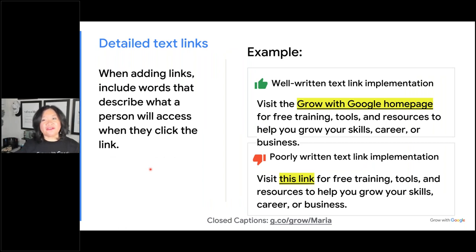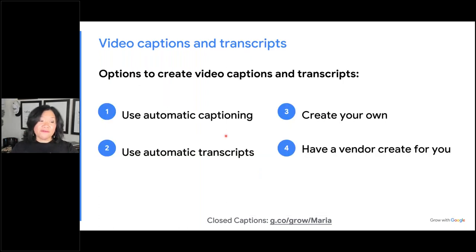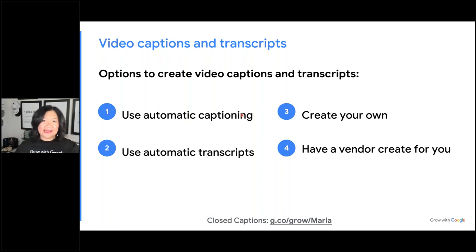When you do text-related links, I've been very guilty of saying 'use this link for free training.' Instead of saying 'this link,' I now give more context. You're not just going to a link — you're going to the Grow with Google homepage, where you're going to get free training tools and resources. When we look at video captions and transcripts, we have to figure out what works best. It could be automatic captioning, automatic transcripts you download and upload as subtitles, or you could create your own using tools like Rev or Subly to add as subtitles.